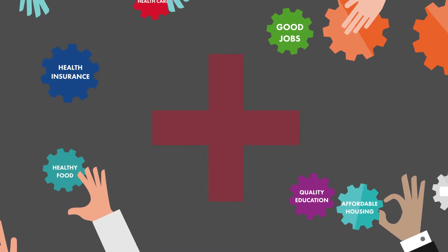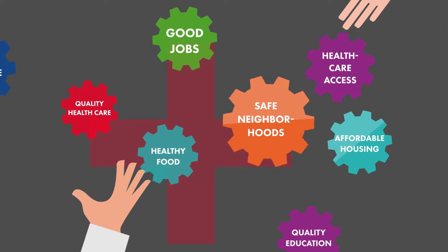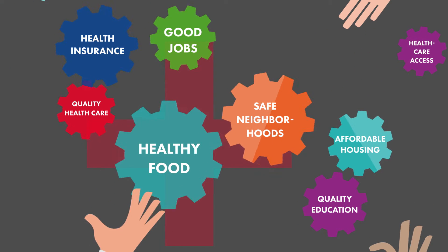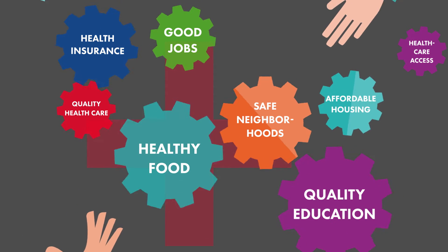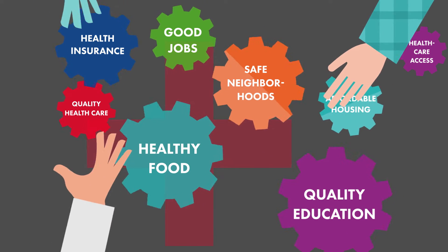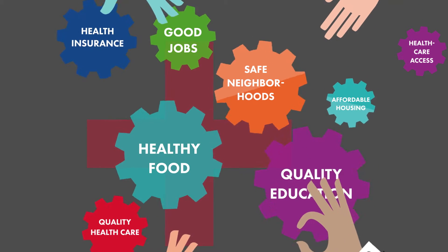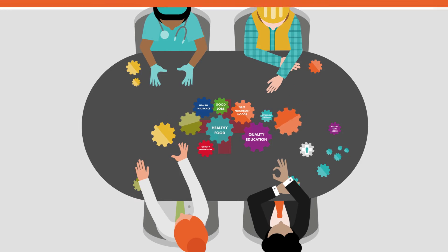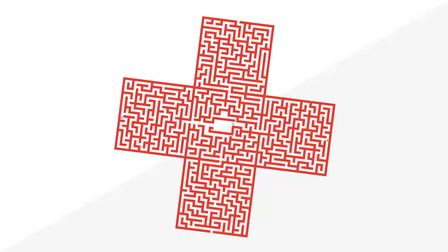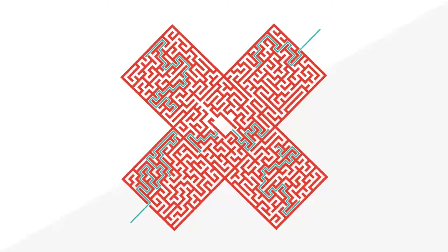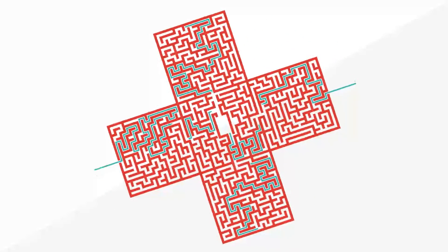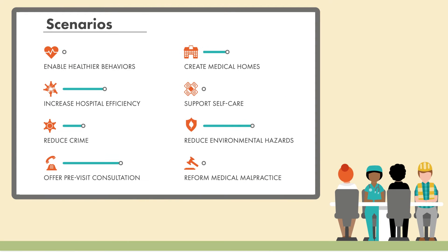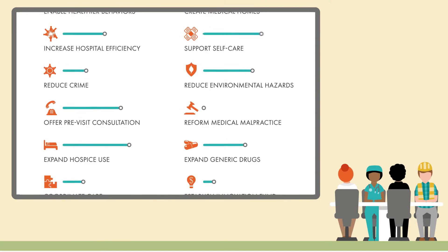Virtually every aspect about the system that shapes health in America can be improved. But if it is not possible to pursue every opportunity at once, at full strength, then where should we begin? Are some strategies, or certain combinations, more powerful than others? And most importantly, how can we think together about the options and trade-offs? One thing is certain: our system for health is far too big and complicated to think through all the issues and potential pitfalls without help.